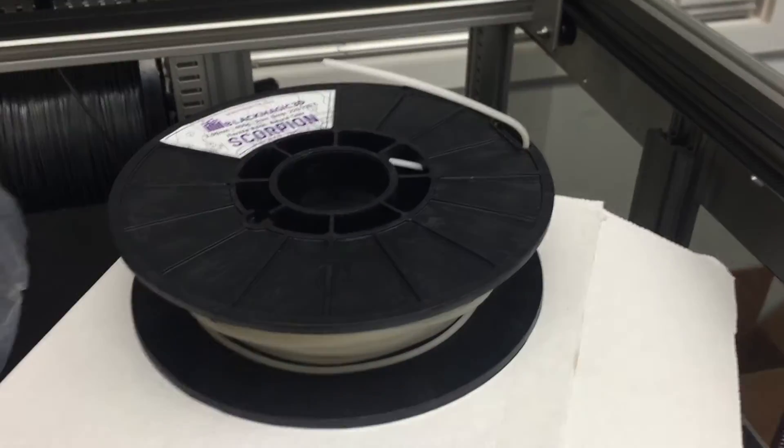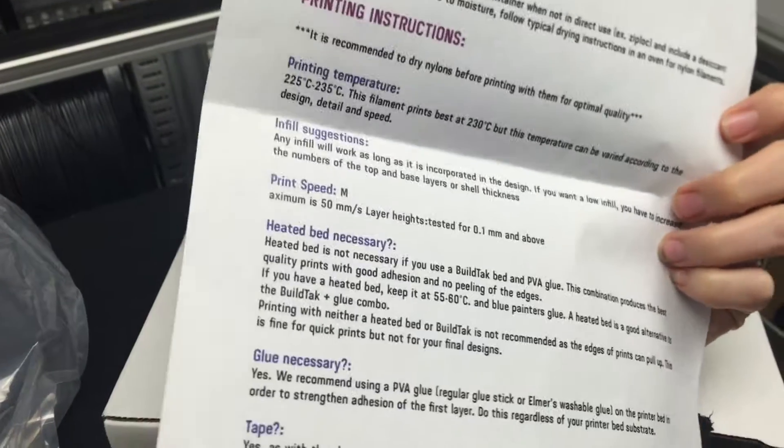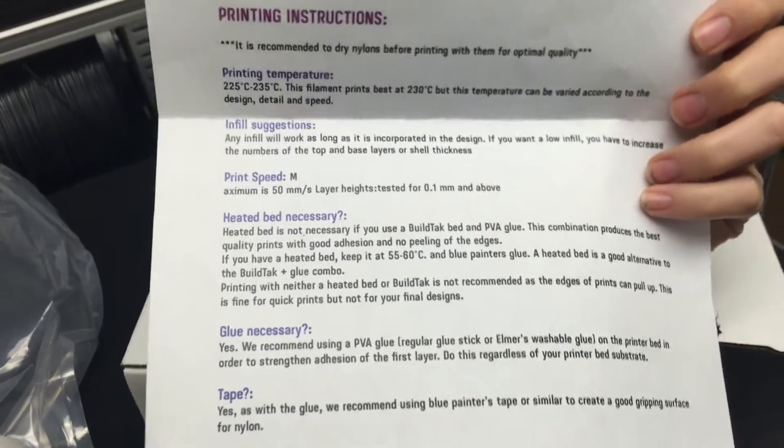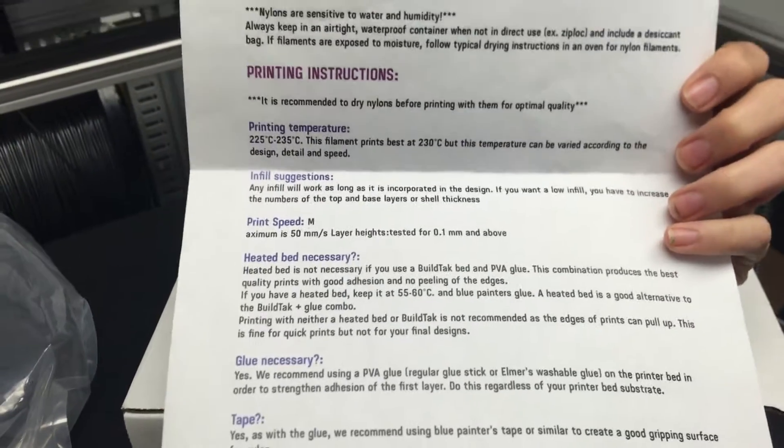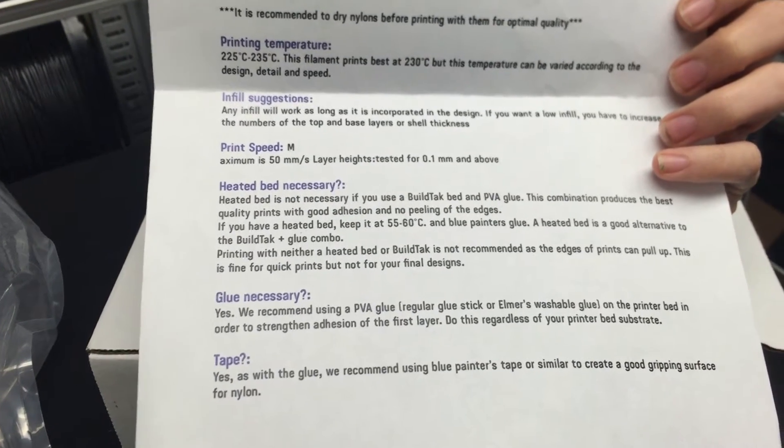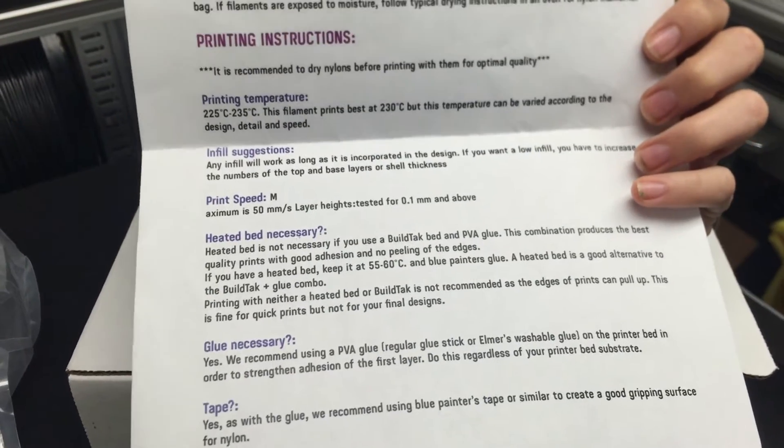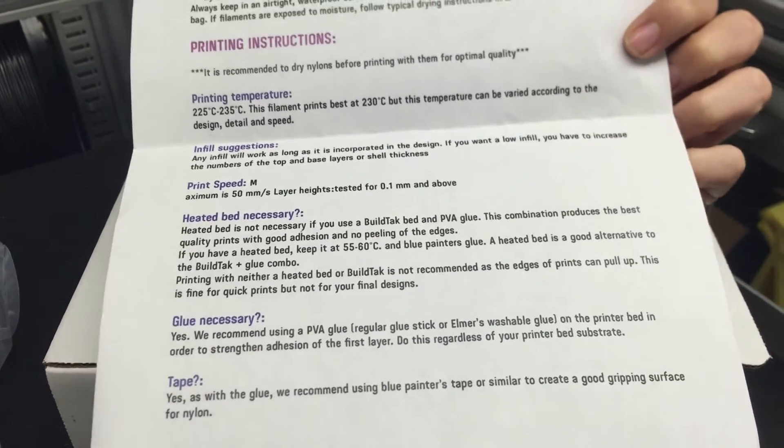I appreciated the sticker on here that provided information on the temperature range that you should print with. It also came with this insert. It's got a cool graphic about Scorpion and some suggestions on how to help printing. One thing that I appreciate in working with exotics is when the manufacturer is honest about the need for blue tape as well as a glue stick, and it was nice that they went ahead and gave a recommendation on that.